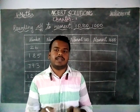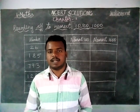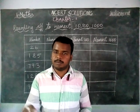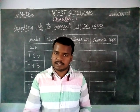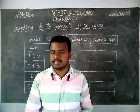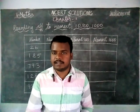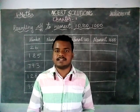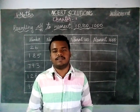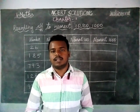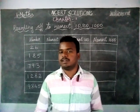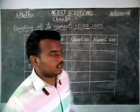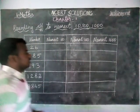Approximately, my estimate is 600. I will buy. Sometimes it may be less than 600, sometimes it may be greater than 600. So in that case, we are using this rounding off method. Now we are going to see how to round off to nearest 10, 100 and 1000.